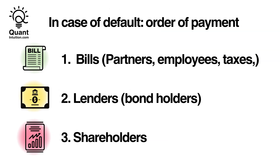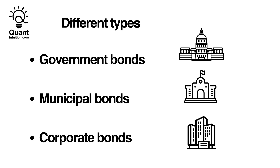In the event of bankruptcy, bondholders often receive preferred treatment over shareholders. This hierarchy underscores the relative safety of bonds compared to stocks. Besides corporate bonds, there are also government and municipal bonds, each with their own risk profile and investment characteristics.